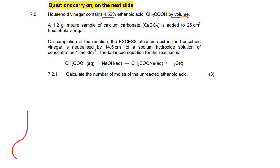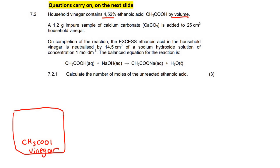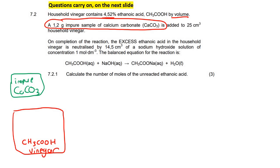Let me explain exactly what is happening. We have a container filled up with vinegar. Household vinegar contains 4.52% ethanoic acid, so inside here we've got some ethanoic acid. Now they take some impure calcium carbonate — CaCO₃ — and they're going to put it into this container. This is an acid, and calcium carbonate is a base — it's a metal carbonate — so when you add these two things together they will react with each other.